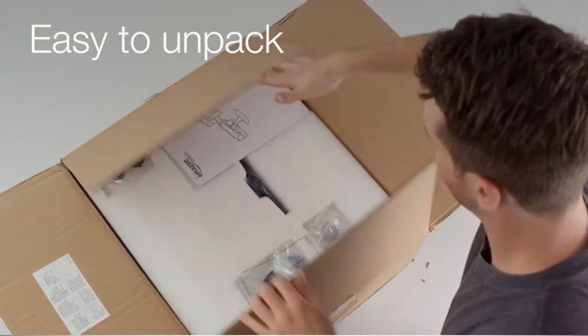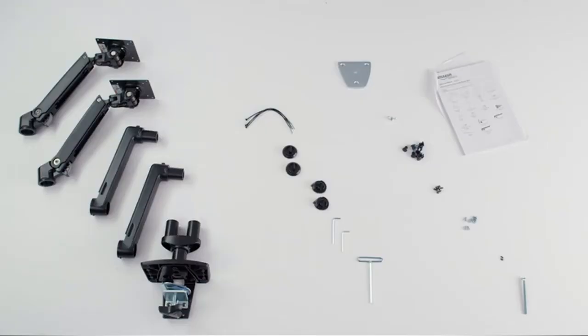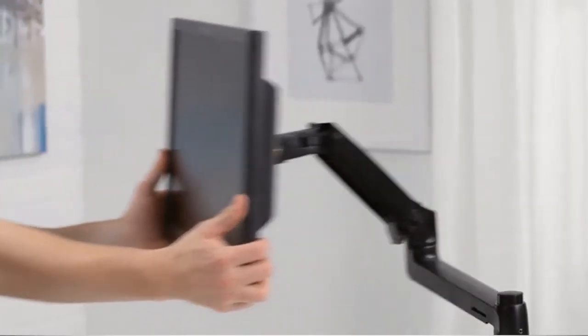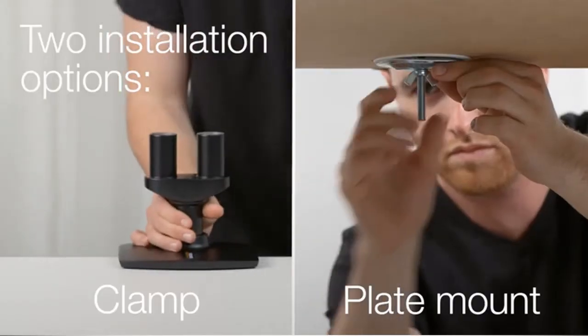The ease of use starts from the moment the package hits your doorstep. You won't have to struggle to open the packaging. The Amazon Basics dual side-by-side monitor arms set up easily and can be attached in two different ways.